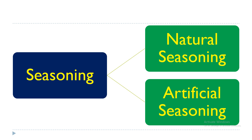The second type is artificial seasoning. Artificial seasoning is a type of seasoning in which we use some artificial means for seasoning the timber. There are different types of artificial seasoning: boiling, water seasoning, steam seasoning, seasoning by chemicals, seasoning by electrical means, and seasoning in kiln.